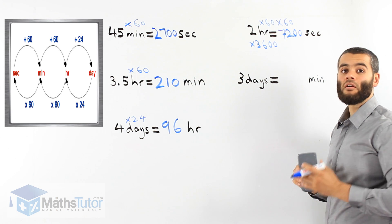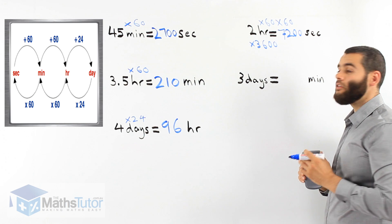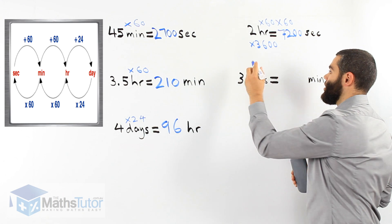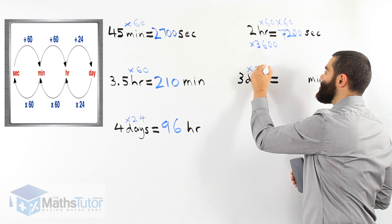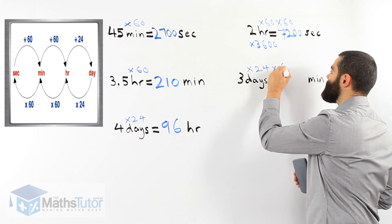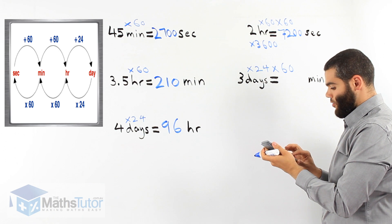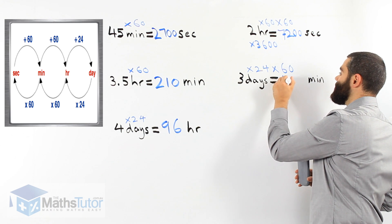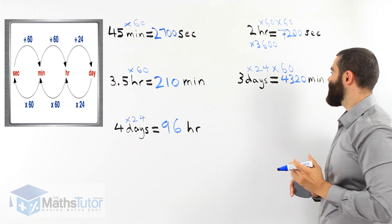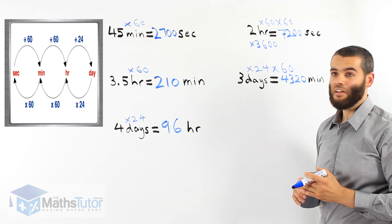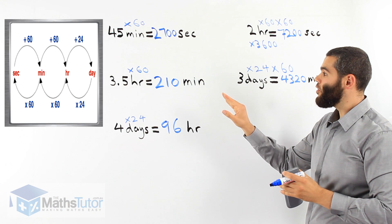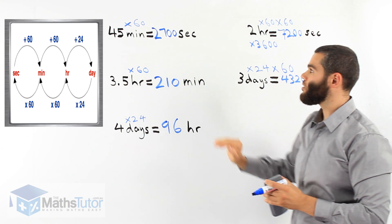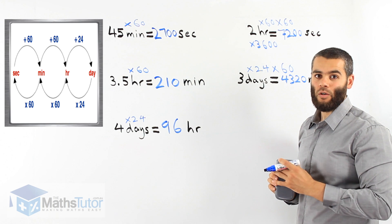From days to minutes: three days to minutes. We know we have to go through hours — days to hours, then hours to minutes. Three times 24 times 60. Therefore three times 24 times 60 equals 4,320 minutes in three days. As you can see, we are converting from a large unit to a small one.